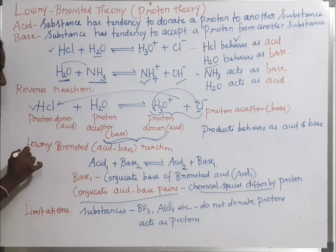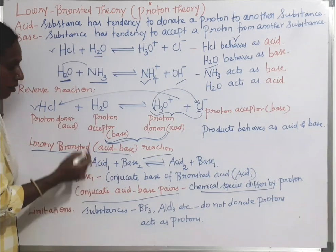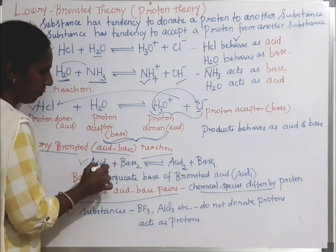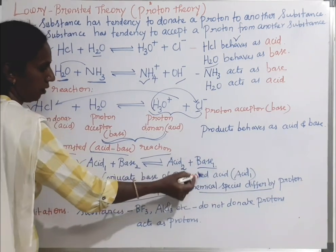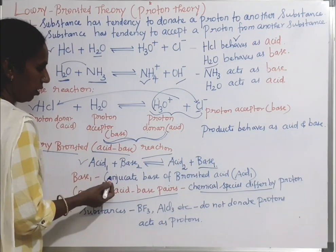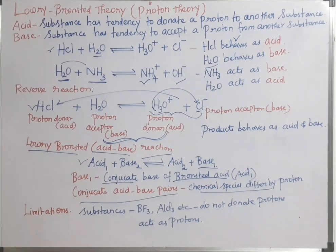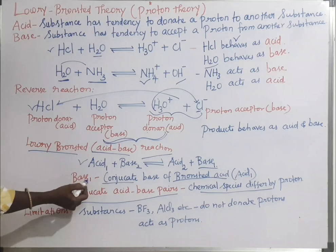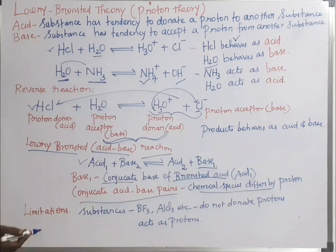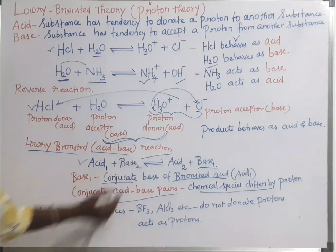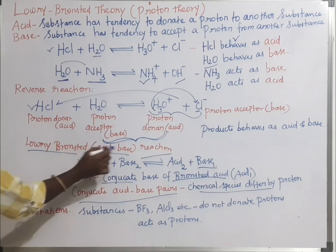Let us see the general Lowry-Bronsted acid-base reaction. In this general reaction, Acid₁ and Base₂ react to form Acid₂ and Base₁. Base₁ is the conjugate base of Bronsted acid Acid₁, forming a conjugate acid-base pair.